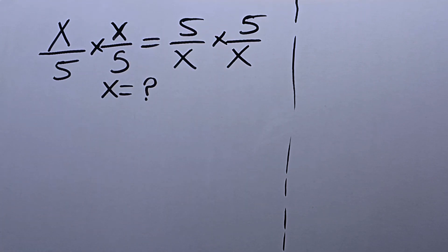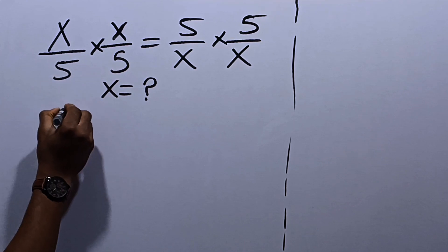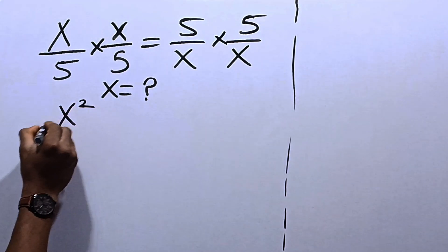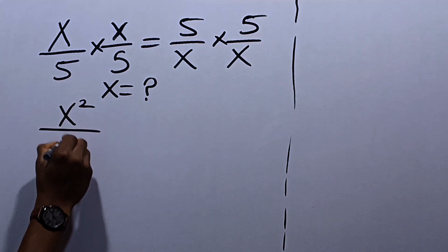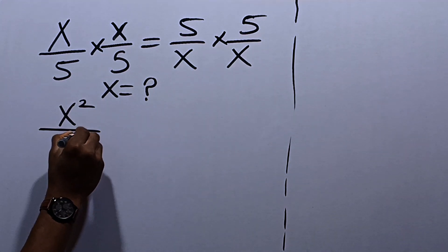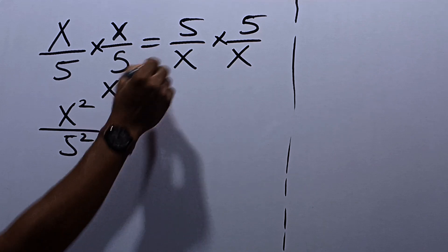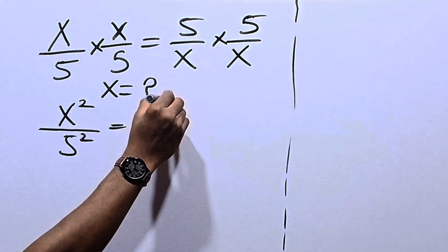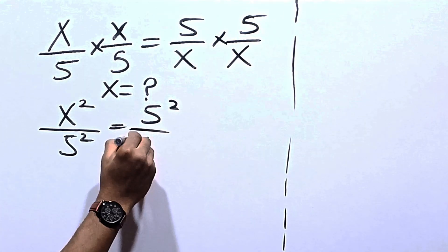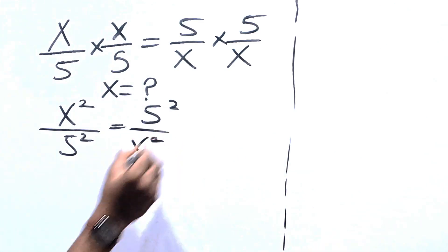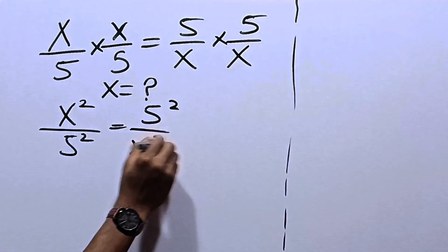Now, we have x times x which is x squared, divided by 5 times 5 which is 5 squared, to be equal to 5 squared over x squared.